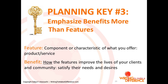Let's move on to planning key number three. Planning key one was focus on the brand; planning key two was focus on the needs of your specific readers; and planning key three — the final one — is to think about the benefits you are offering as opposed to just the features. When we talk about features, we are talking about programs, components, or characteristics of what you offer — usually the services in your organization. I encourage you to dig a level deeper into the benefits: how do those programs, services, and features improve the lives of your clients and community? How do they satisfy their needs and desires?